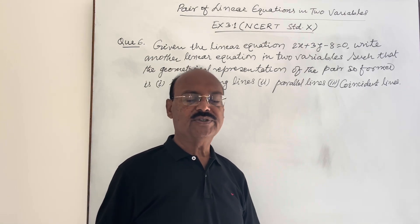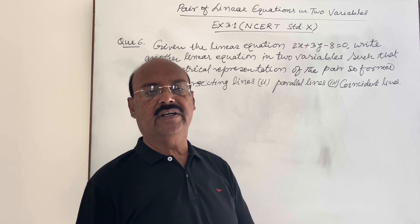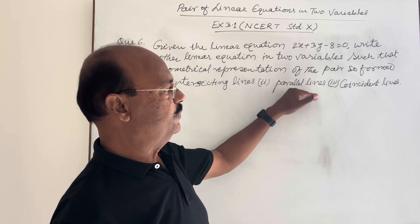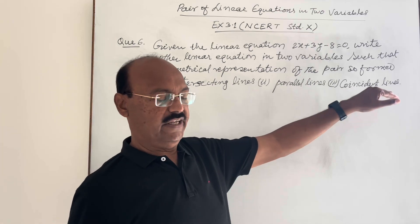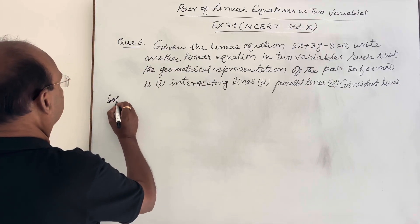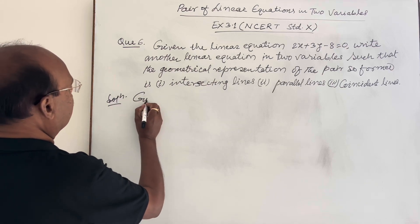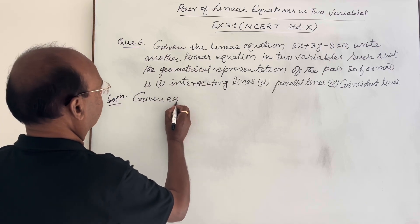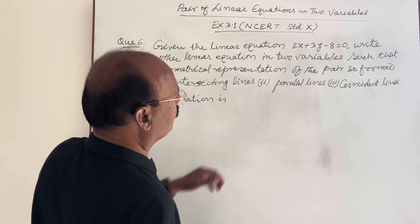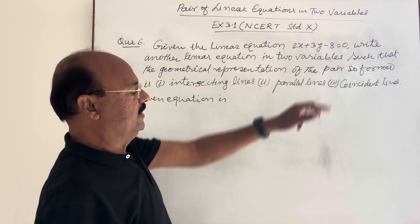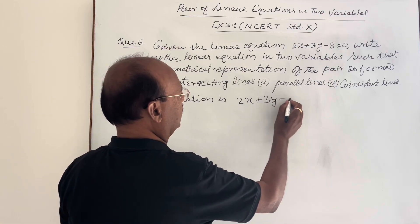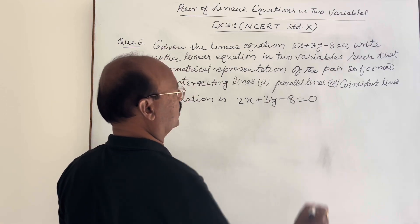In the previous videos, we have discussed what are the different conditions for these criteria — intersecting lines, parallel lines, and coincident lines. So let us see the solution here. The given equation is 2x + 3y - 8 = 0.